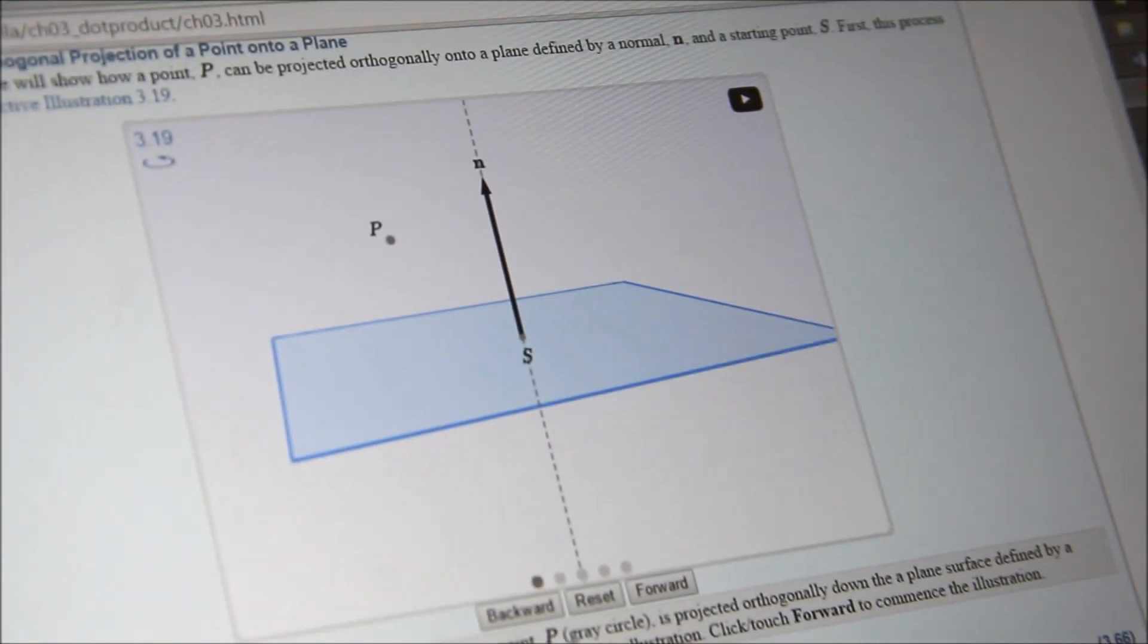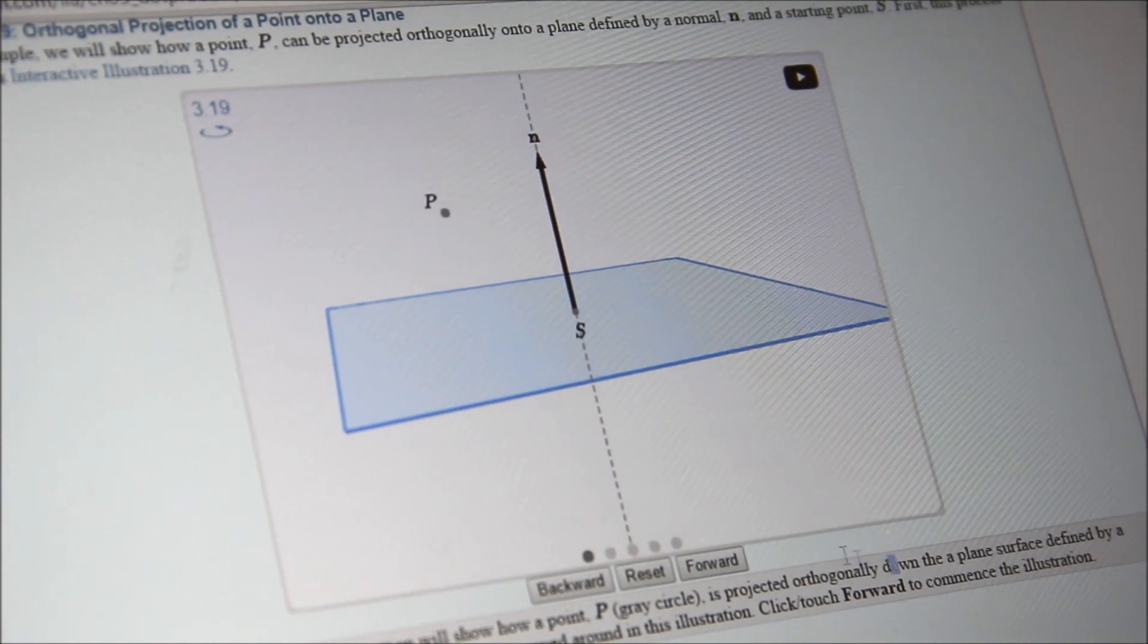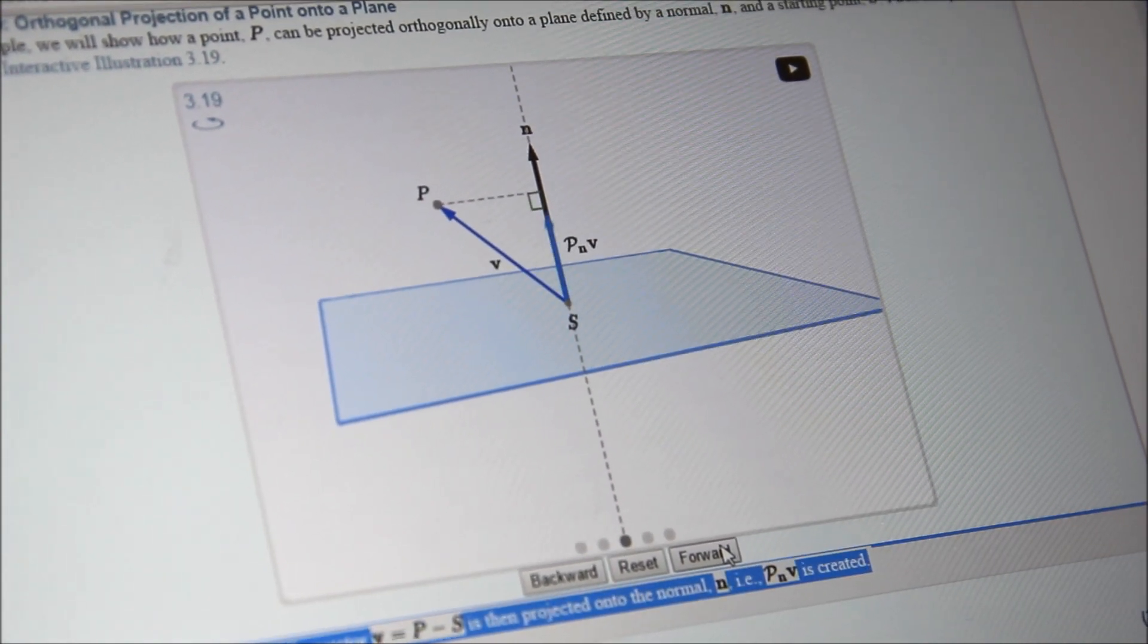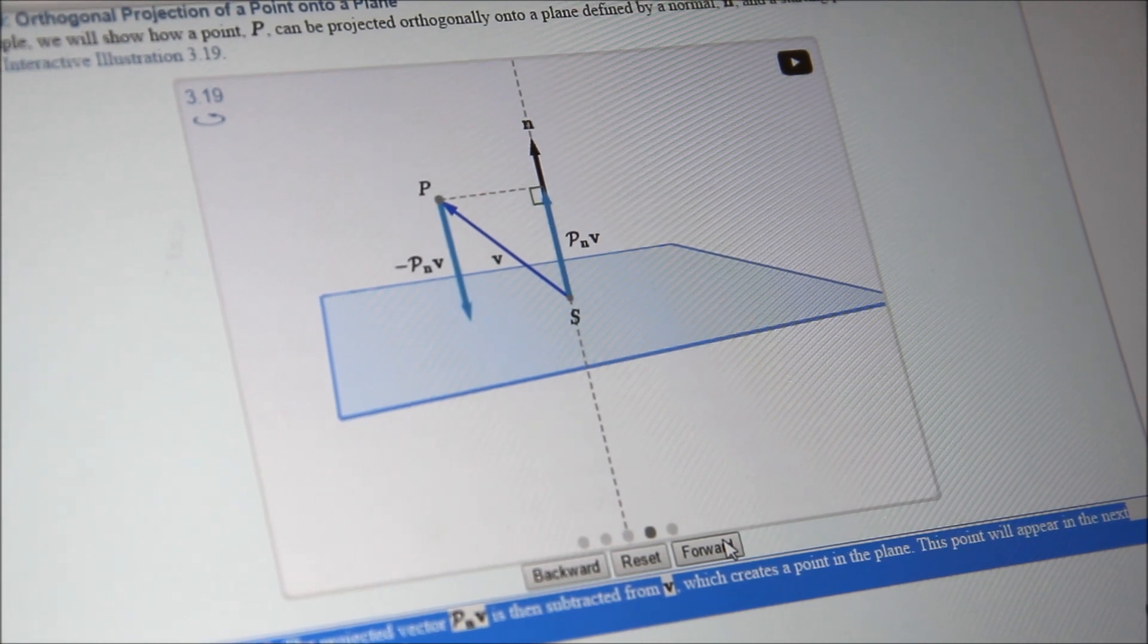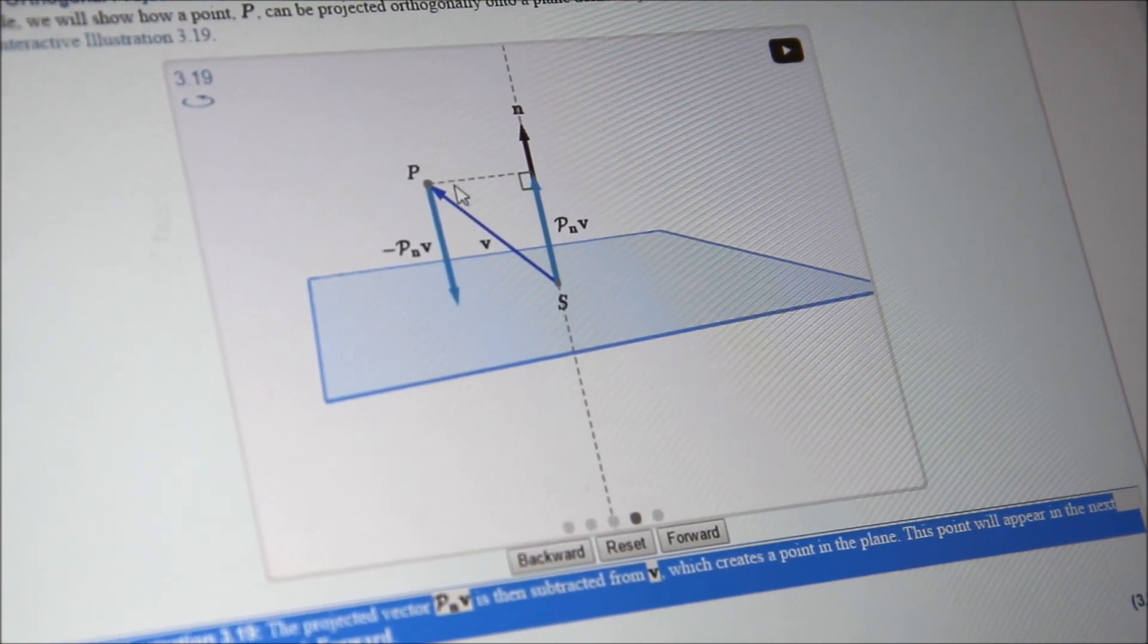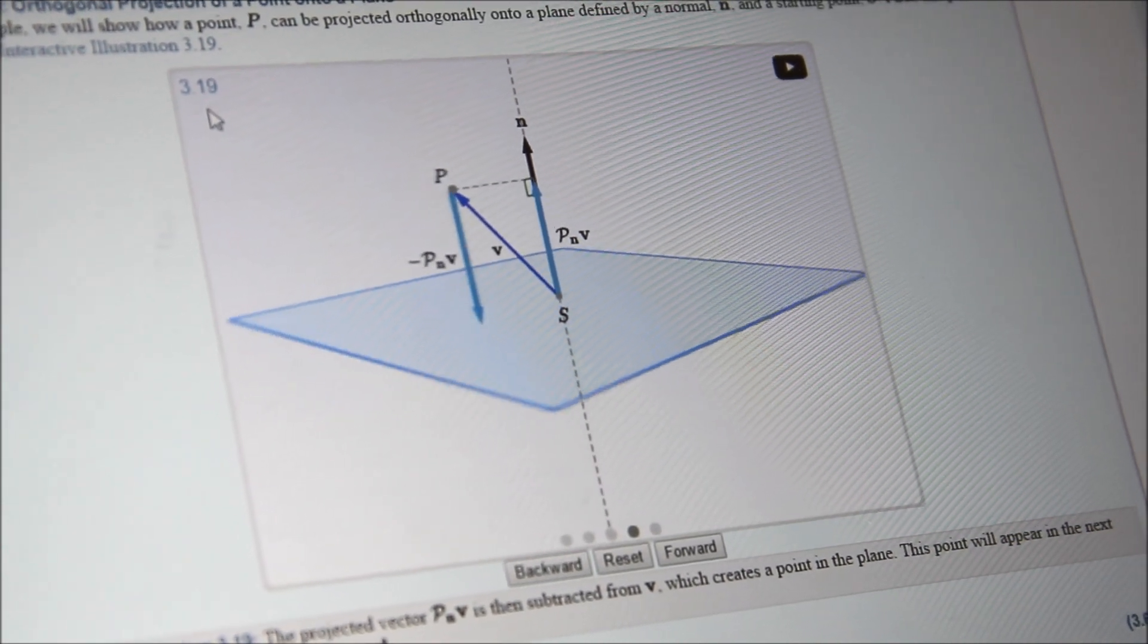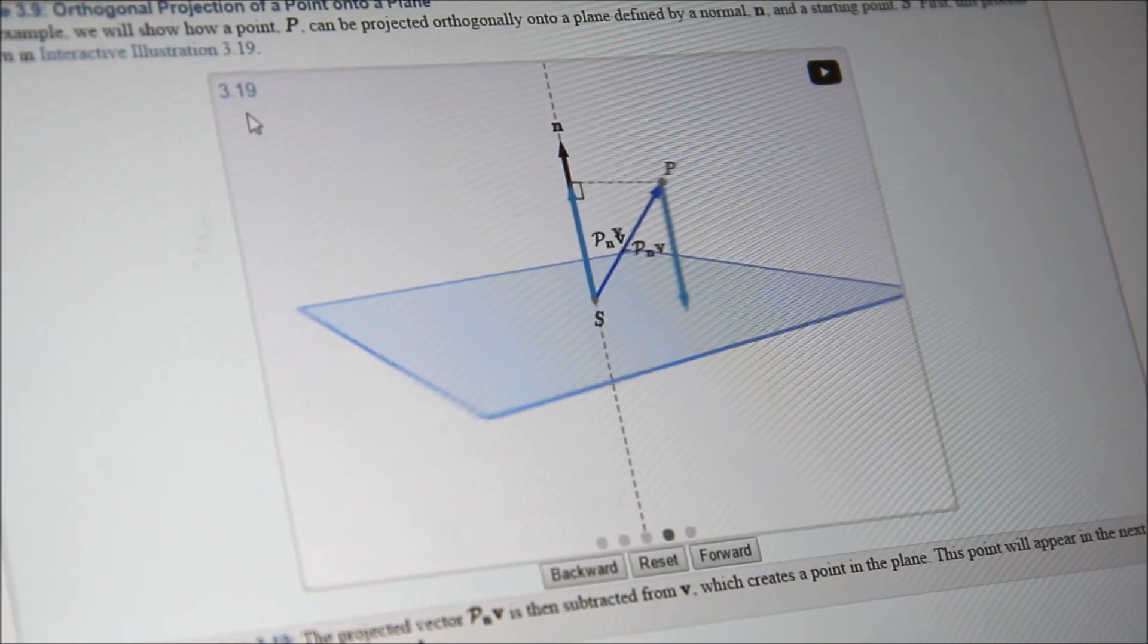For instance, here's a figure illustrating orthogonal projection of a point on a plane. You can step forward and see different aspects of how you project a point to a plane. But you can also see what will happen if I change the point, and you can rotate the image to see what it will look like from another viewpoint.